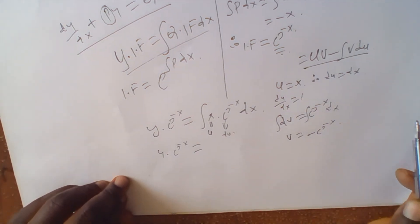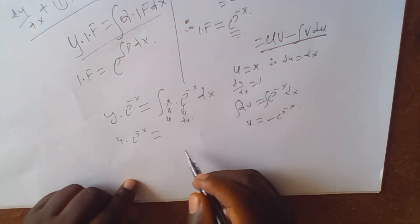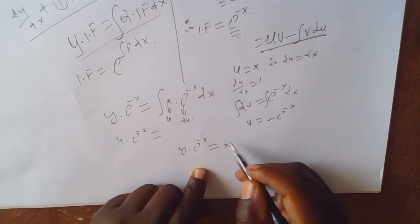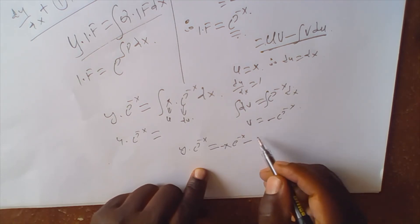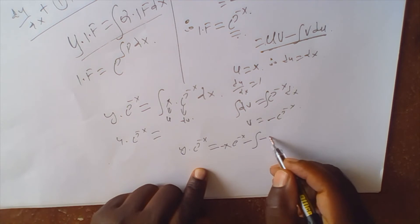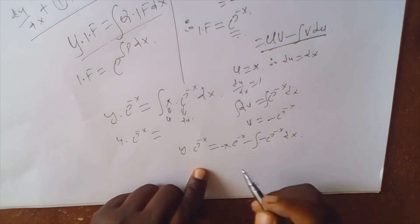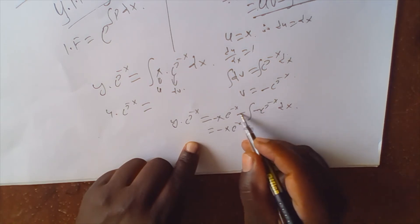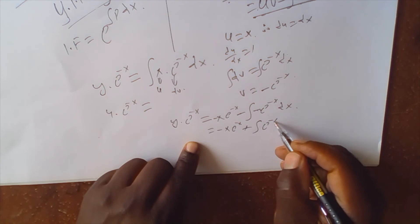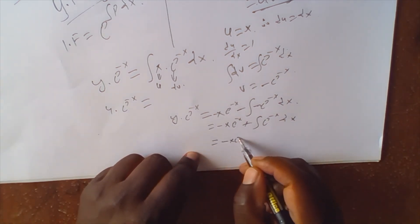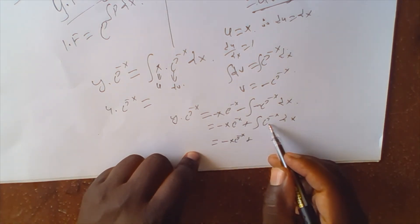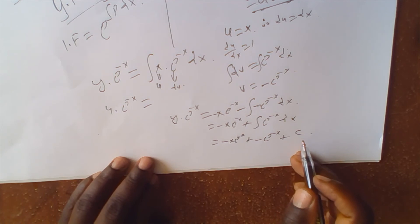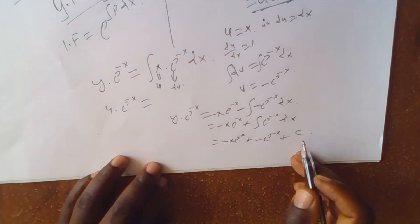Substituting into the integration by parts formula, y times e to the negative x equals u times v, which is 2x times negative e to the negative x, minus the integral of v du, which is negative e to the negative x times dx. This equals negative 2x e to the negative x, plus the integral of e to the negative x dx. Integrating e to the negative x gives negative e to the negative x, so we get negative 2x e to the negative x minus e to the negative x, plus a constant of integration.